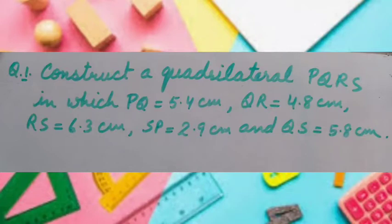Construct a quadrilateral PQRS in which PQ equals 5.4 centimeter, QR equals 4.8 centimeter, RS equals 6.3 centimeter, SP equals 2.9 centimeter, and QS equals 5.8 centimeter.